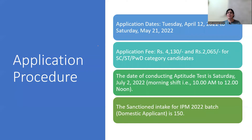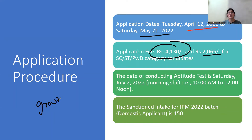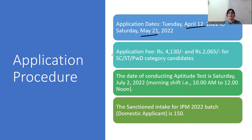For the application process, the form filling session starts from 12th April and the last date is 21st May. I will upload a video on the demo form filling so you can see it properly. The form filling fee is ₹4,130 for the General category and ₹2,065 for the SC, ST, PWD category. If you have any query, you can mail me at growtogether60@gmail.com or ask in the comment box.